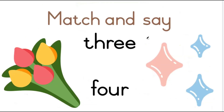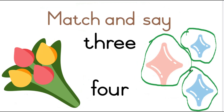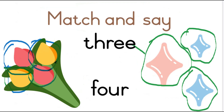Now, let us match and say. How many stars do we see? 1, 2, 3 — that would be 3 stars. And how many tulips do you see? 1, 2, 3, and 4. Let's match that to the number 4.